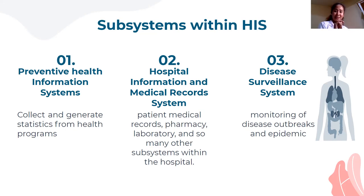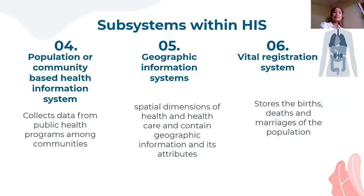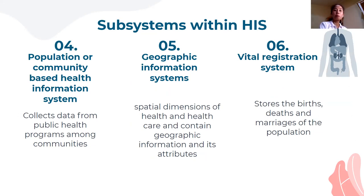Number three: disease surveillance systems. These monitor disease outbreaks and epidemics — right now we're in a pandemic. Surveillance systems are very important; they monitor malaria, TB, parasitic diseases, and dengue. Number four: population or community-based health information systems, such as CHIPS and RHIS. There are videos in your module — watch them and you'll learn a lot. These collect data from public health programs like maternal health programs, care of pregnant women, and nutrition programs.